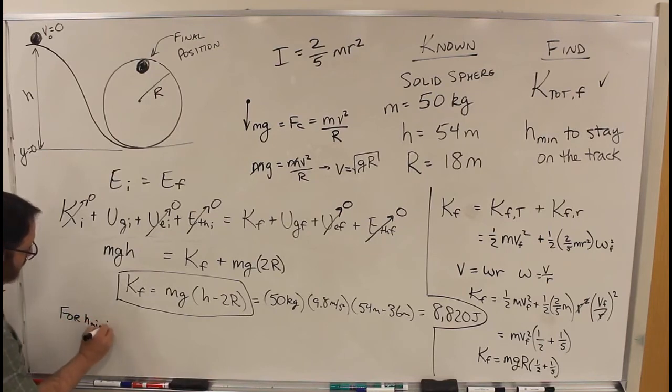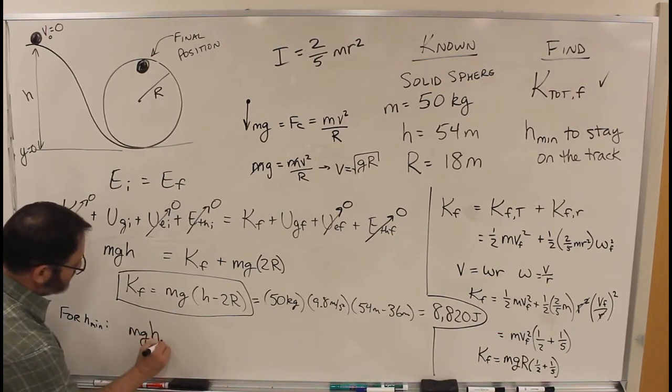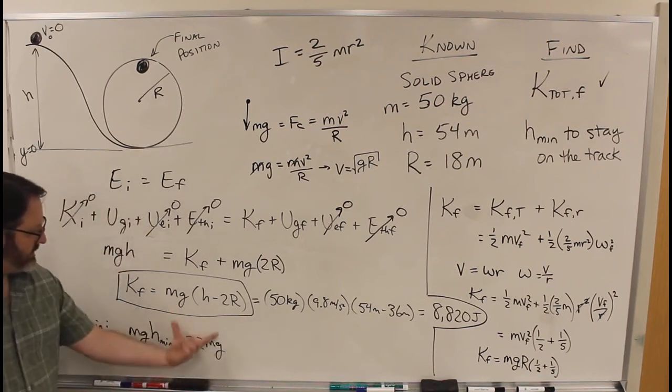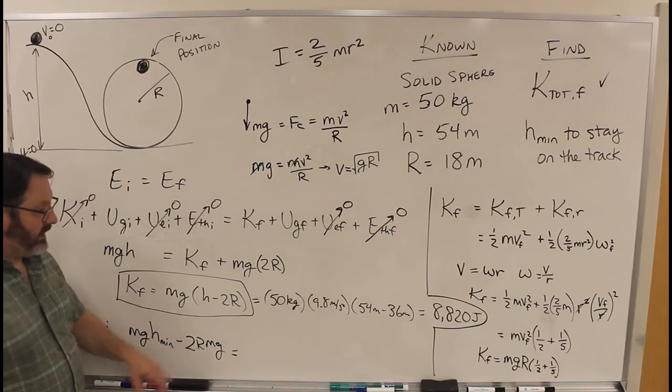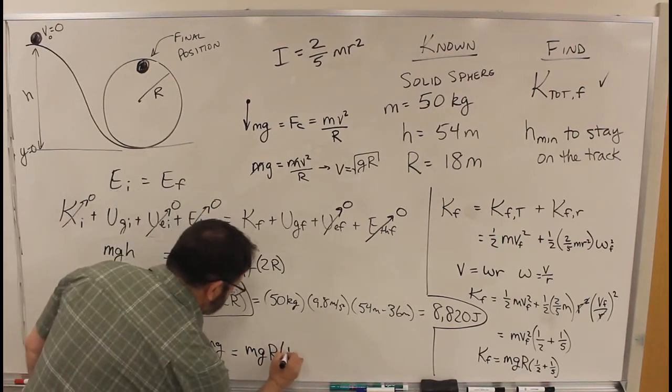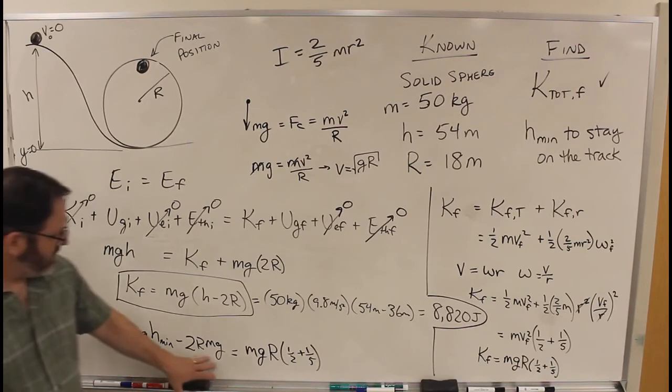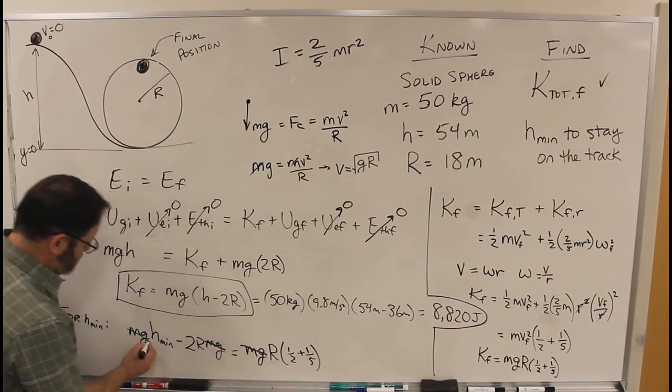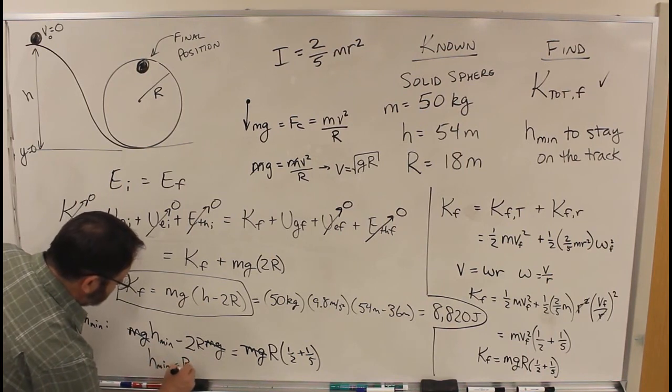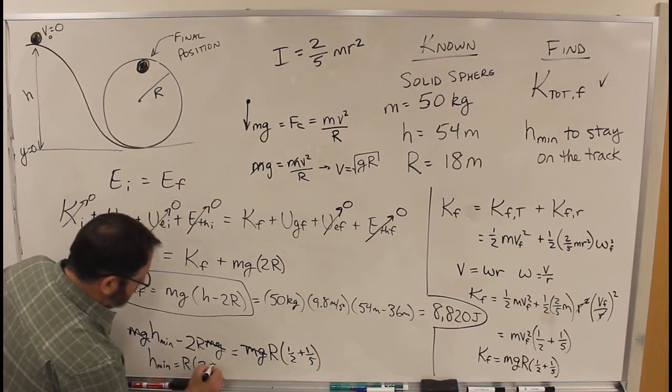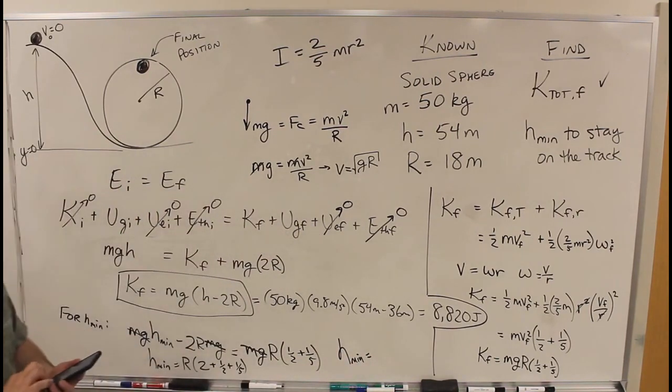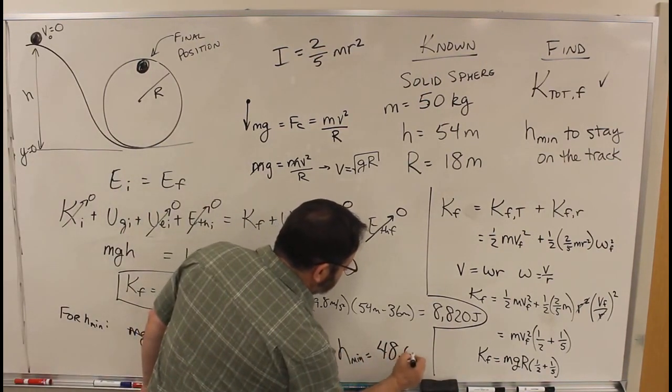So for H min, MGH minus 2RMG, that's this part, that's K final from here, has to be equal to MGR times, MGR goes away, so H min equals R times 2 plus 1 half plus 1 fifth. So H min equals 48.6 meters. Cheers.